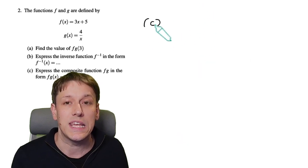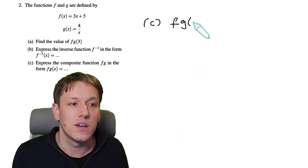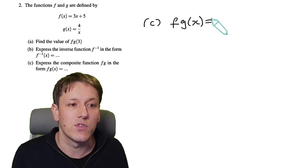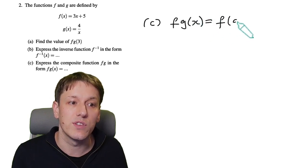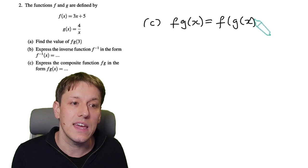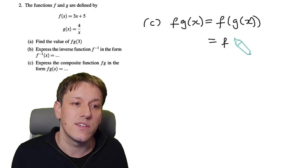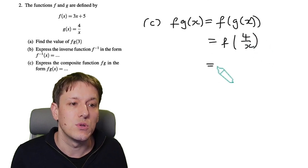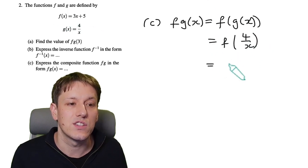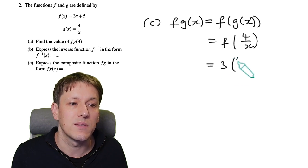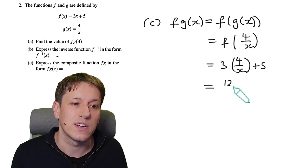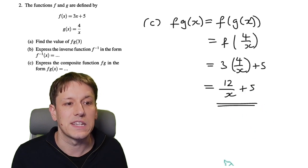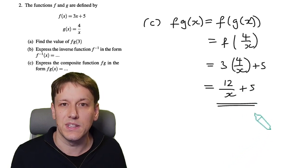For the composite function f(g(x)), similar to part a but in general now. g(x) = 4/x, so I put 4/x into the definition of f to get 3 × (4/x) + 5. That gives 12/x + 5, and since it can't be simplified further we leave it like that.